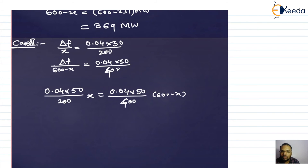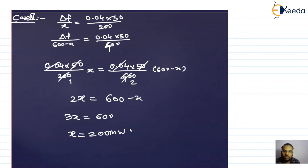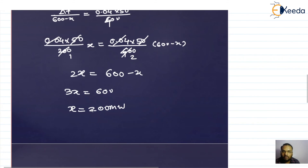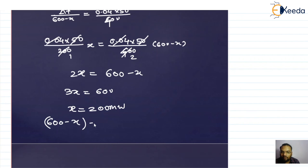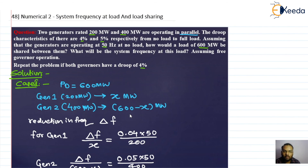After cancellation, shifting the factor of 2 gives 2x = 600 minus x, so 3x = 600, and x = 200 megawatt. With the same droop characteristics, generator one is loaded exactly to its full load capacity of 200 megawatt, and generator two takes the remaining 400 megawatt. This is how load sharing problems are solved by controlling frequency through droop characteristics. Thank you very much.